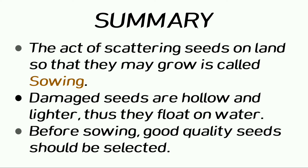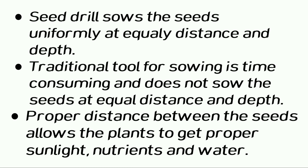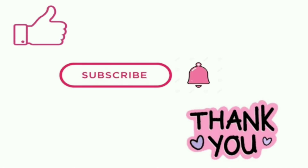Let us take a quick look at the summary points. The act of scattering seeds on land so that they may grow is called sowing. Damaged seeds are hollow and lighter, thus they float on water, so good quality seeds should be selected before sowing. The seed drill sows seeds uniformly at equal distance and depth, while the traditional tool is time-consuming and does not sow seeds at equal distance and depth. Proper distance between seeds allows plants to get proper sunlight, nutrients, and water. Thank you — keep watching, please like, subscribe, and press the bell icon to get notifications of upcoming videos.